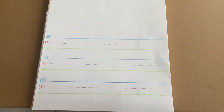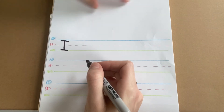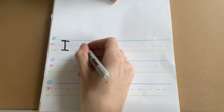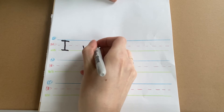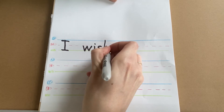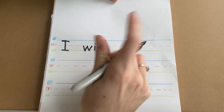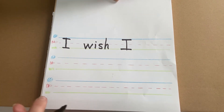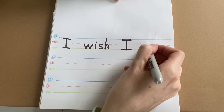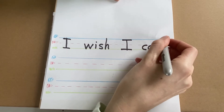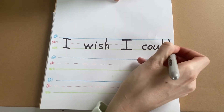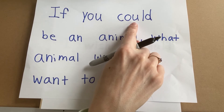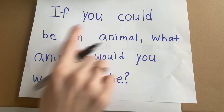I will start with an uppercase I. Then I'll do a finger space. Wish — W-I-S-H. I wish. Then uppercase I. Could is a word from my question: C-O-U-L-D. I can see that right here in my question — 'if you could be.'